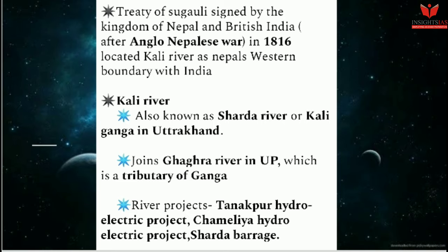Let's discuss some facts about the Kali river. It is also known as the Sardar river or Kali Ganga in Uttarakhand. It joins the Ghagra river in Uttar Pradesh, which is a tributary of the Ganga. The major river projects on the Kali river are the Tanakpur hydroelectric project, the Chamelia hydroelectric project, and the Sardar Barrage.